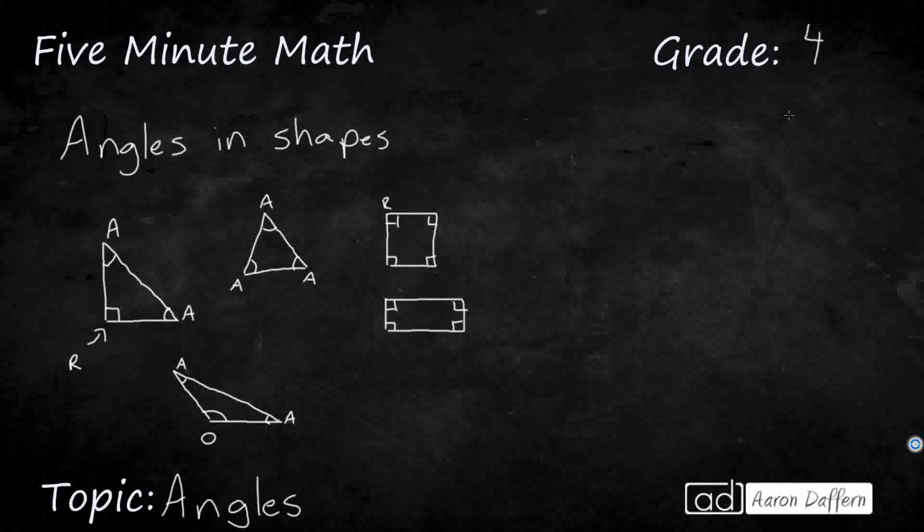But you can have some quadrilaterals that don't have right angles. Most of us are familiar with a trapezoid. So this is your traditional trapezoid. Trapezoid actually has two big angles, two obtuse angles, but then it also has two acute angles.